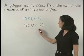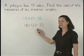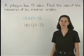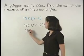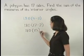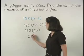Simplifying inside the parentheses first, 17 minus 2 is 15. So we have 180 times 15, which is 2700.